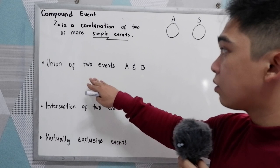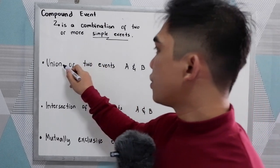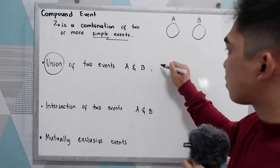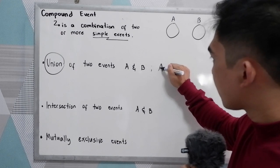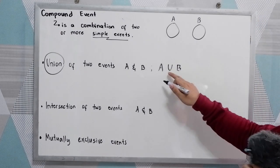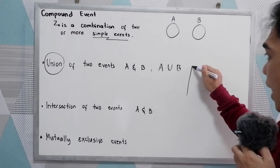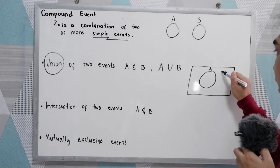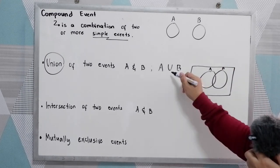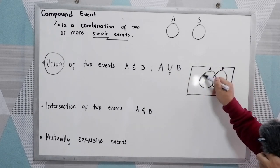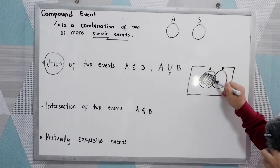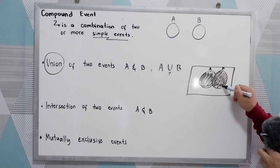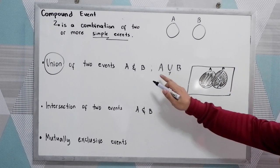Now let us illustrate the union of two events A and B. In your grade 7 lesson, we have the union. This can also be written as A union B. And if we're going to draw in our event diagram, let's say this is event A and event B — getting their union, we're going to shade both A and B. That is the union of two events A and B, written as A union B.